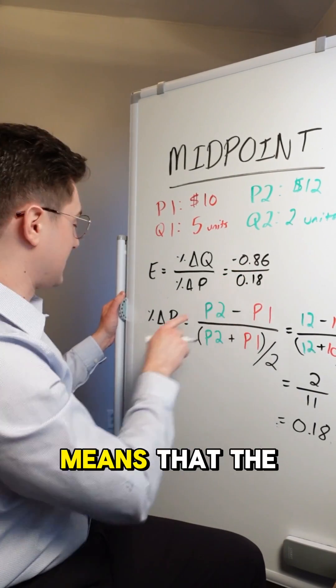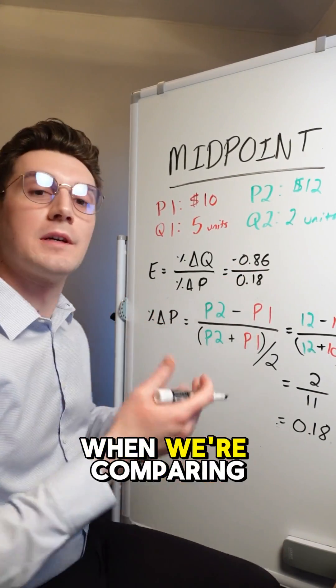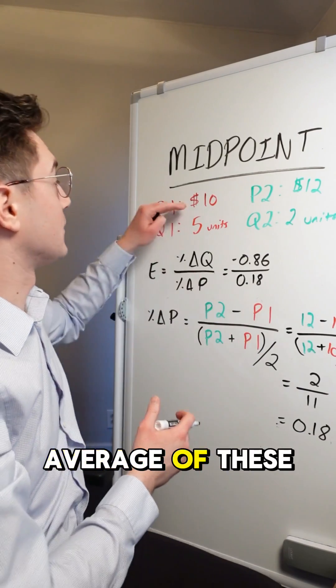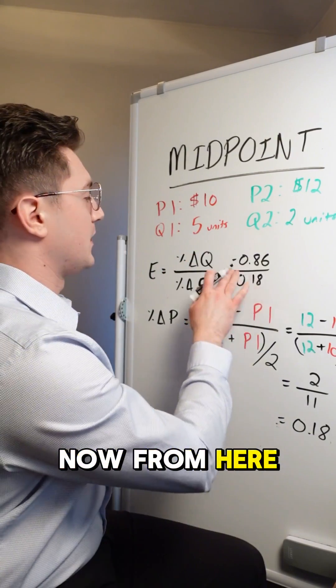And in other words, means that the percent change in price when we're comparing the base to the average of these price values is plus 18%. Now from here,